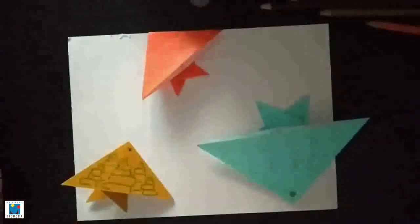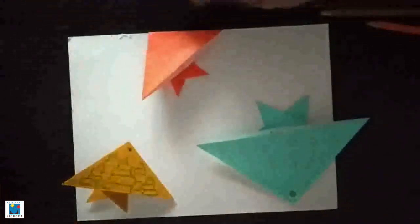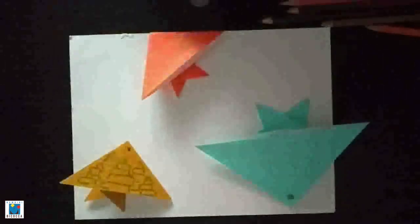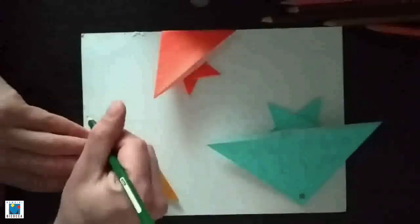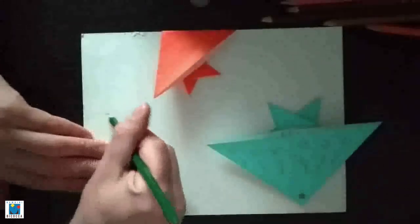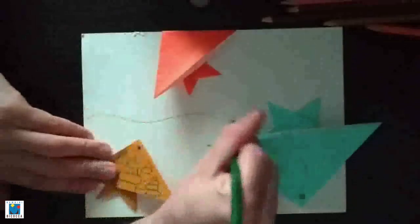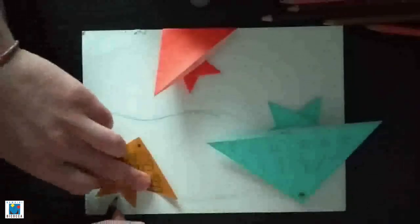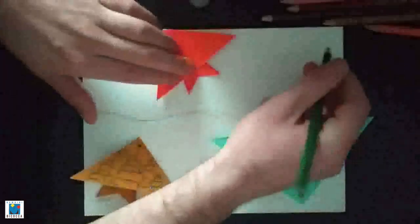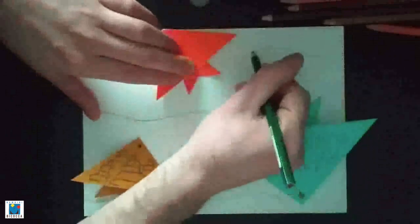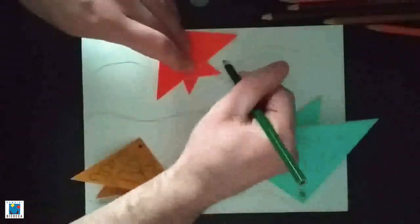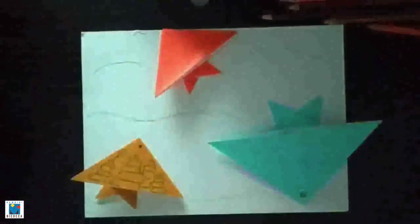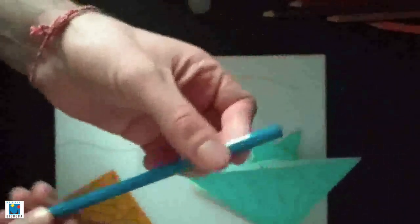Now, I can draw some seaweed from the floor of the ocean, from the bottom of the ocean. Seaweed grows. Maybe one here as well. I'm going to take the blue color and I'm going to draw some bubbles.